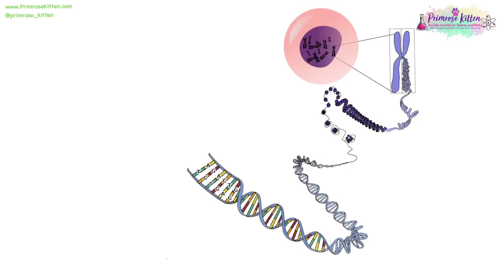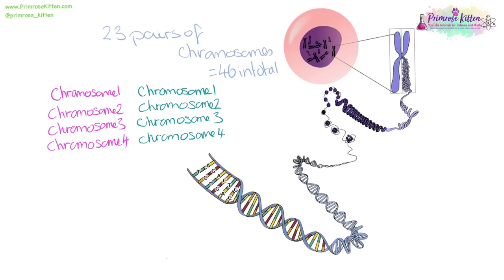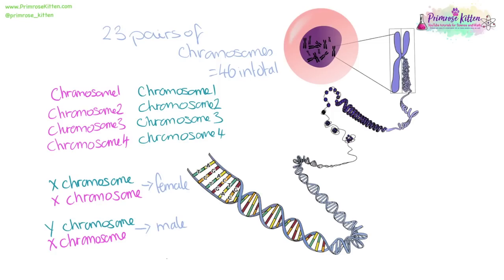Your chromosomes are in the nucleus and you have 23 pairs — 46 in total. You get one copy from your mother and one from your father, giving you two copies of each chromosome. This allows you to be homozygous or heterozygous for dominant or recessive genes. If you have inherited two X chromosomes, you are genetically female; if you have inherited an X and a Y chromosome, you are genetically male.